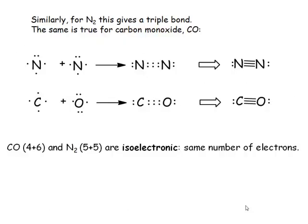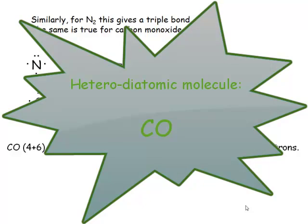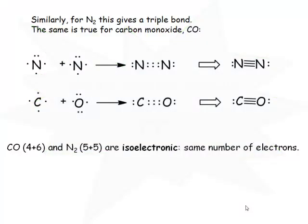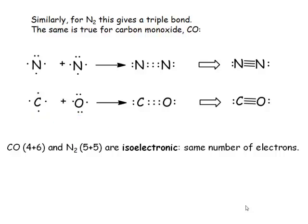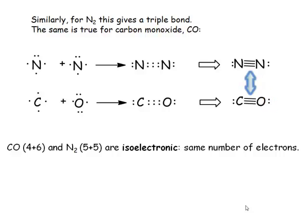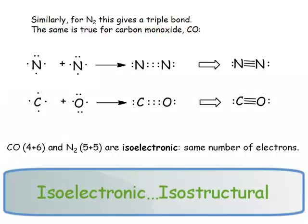This is our first example of a heterodiatomic molecule — these two atoms are different. Carbon is in group 14 and has four valence electrons; oxygen is still in group 16 and has six valence electrons. If we bring these two species together using Lewis theory, we would predict a triple bond between the two species, with a lone pair on carbon and a lone pair on oxygen. Dinitrogen is isoelectronic to carbon monoxide, meaning it has exactly the same number of valence electrons surrounding its bonding atoms. As soon as they're isoelectronic, you can expect them to be isostructural — to have the same structure as well.